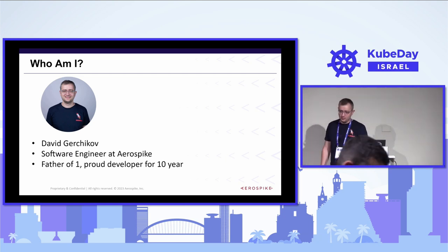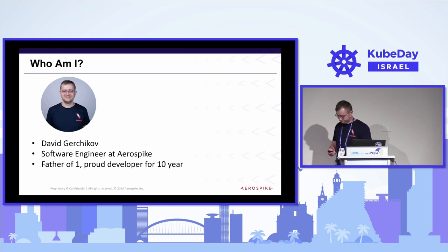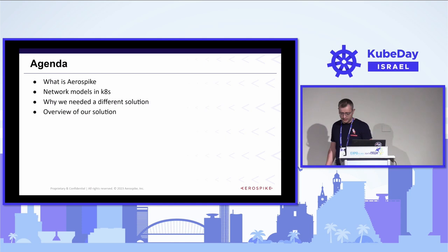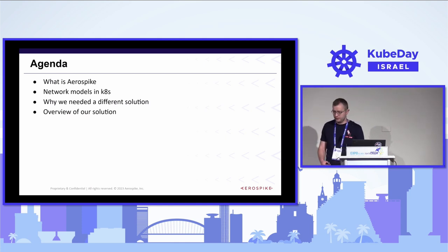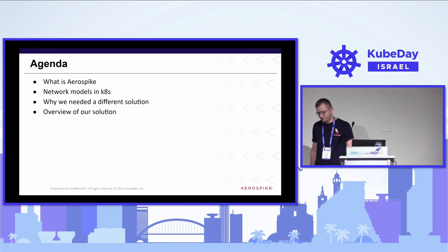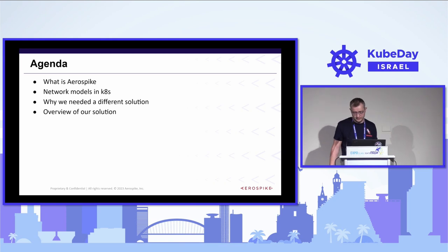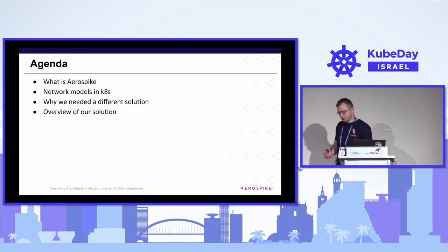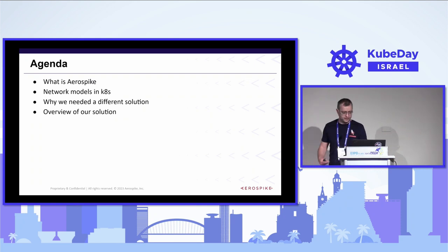I've been using Kubernetes for the last five years. Today, I will first introduce AeroSpike to give you a little bit of context. Afterwards, I will talk about different networking models in Kubernetes — which is which, and when they are useful. And after that, I will address the issue that we faced and the way we solved it.